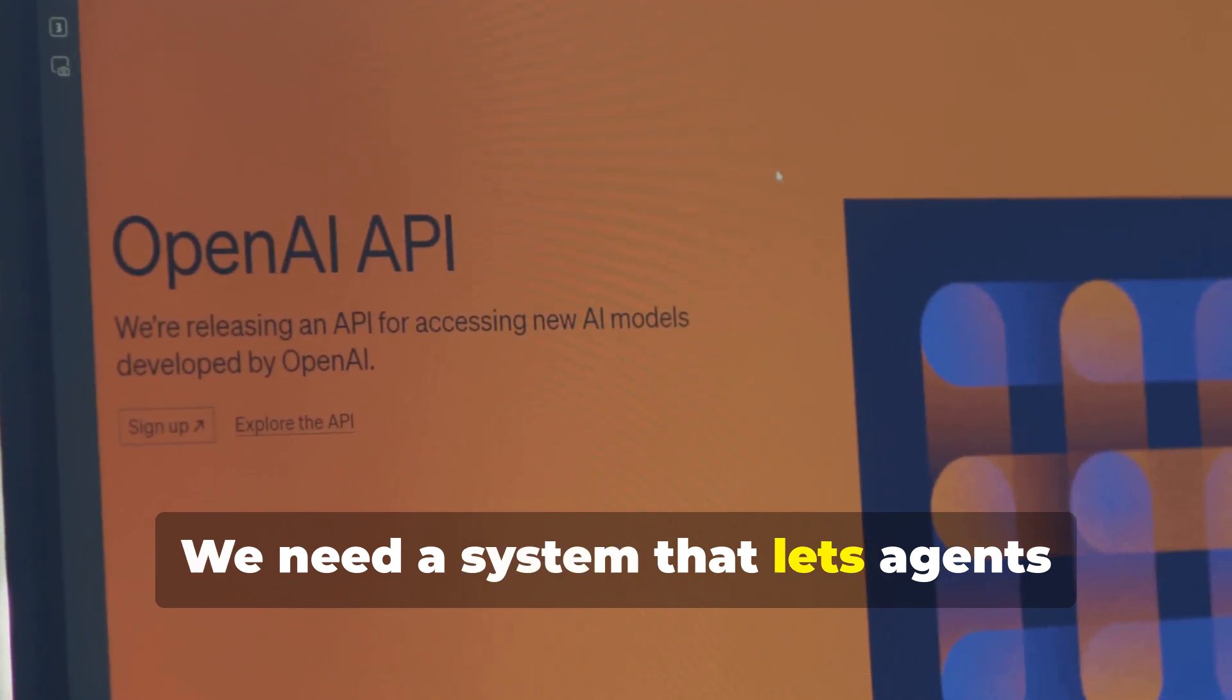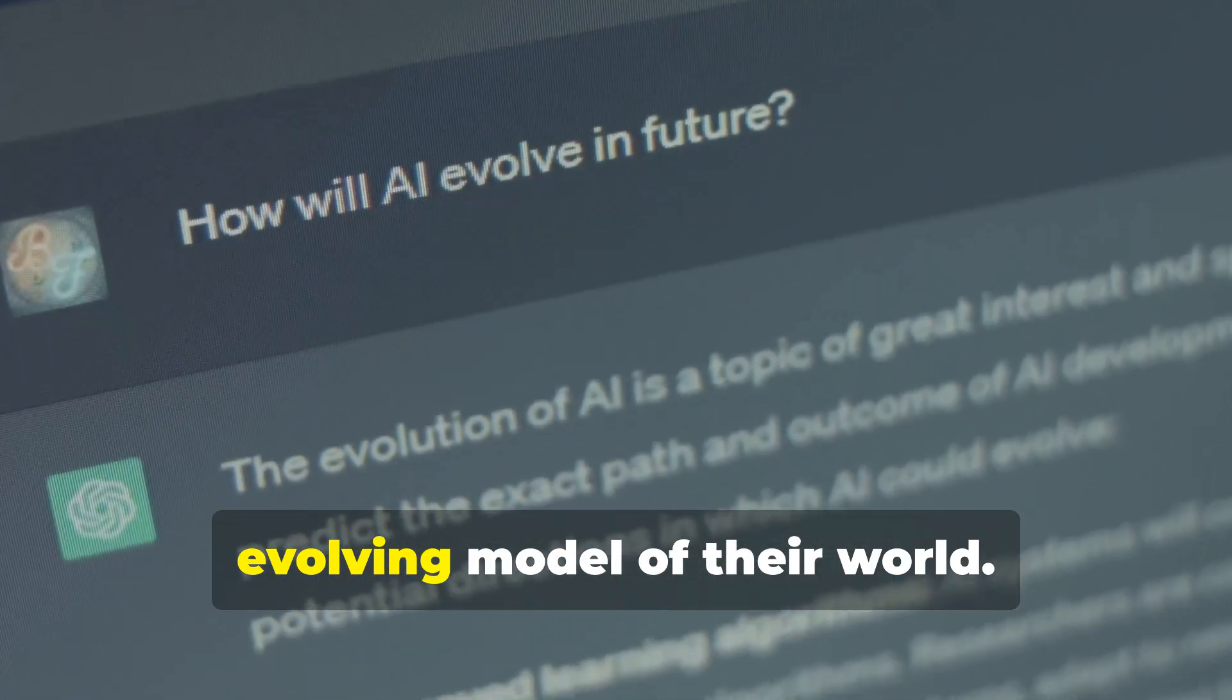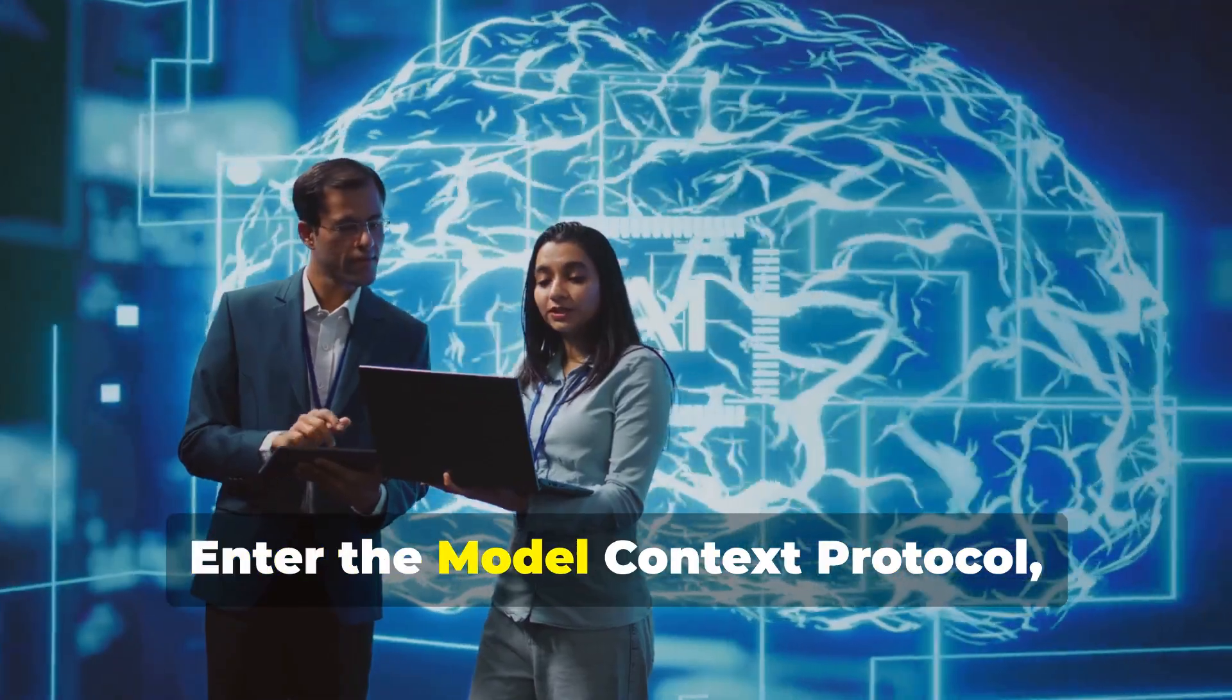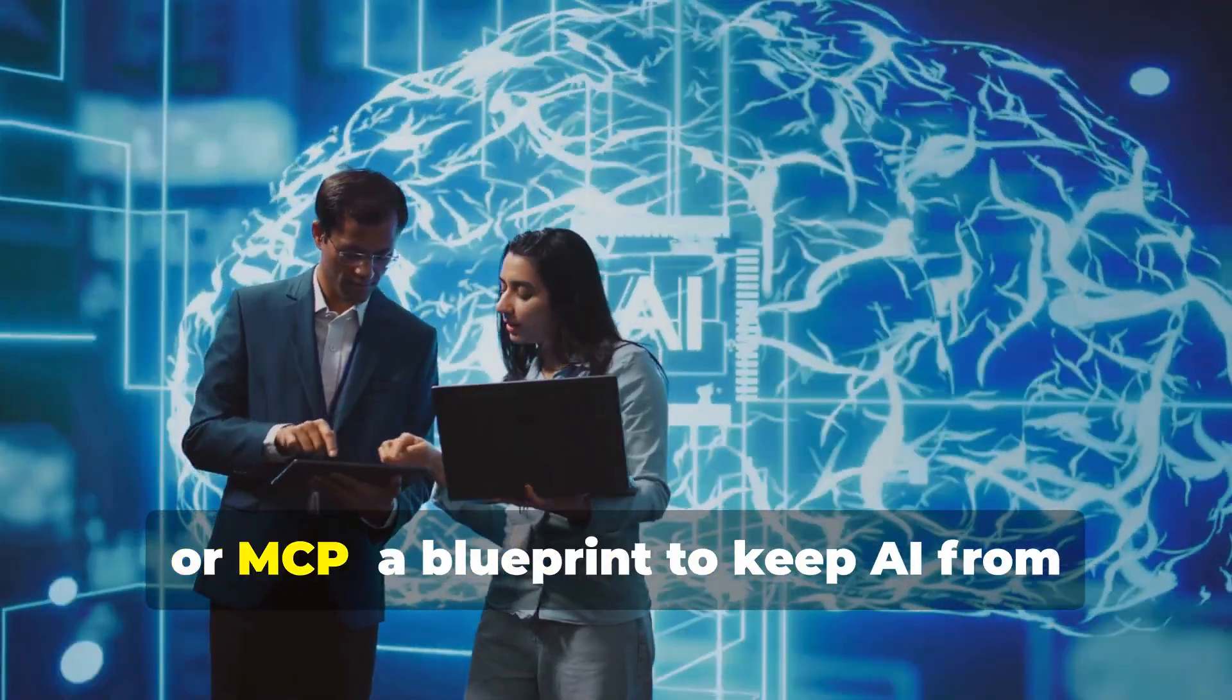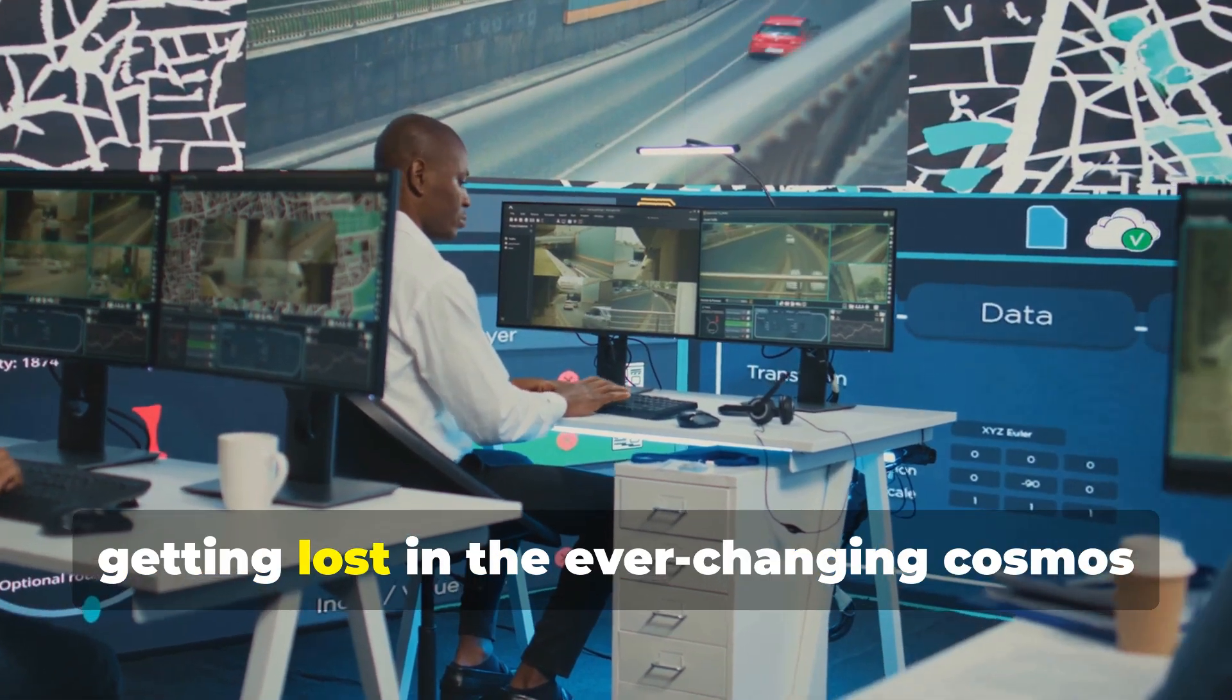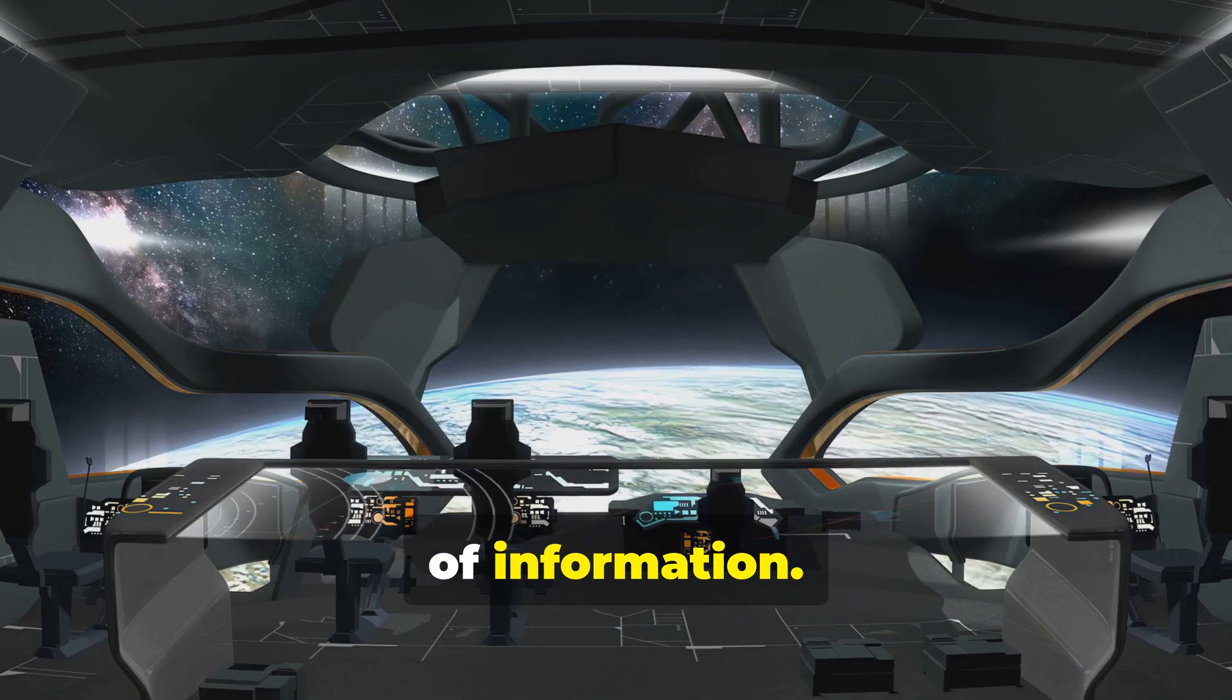We need a system that lets agents maintain a rich, evolving model of their world. Enter the model context protocol, or MCP, a blueprint to keep AI from getting lost in the ever-changing cosmos of information.